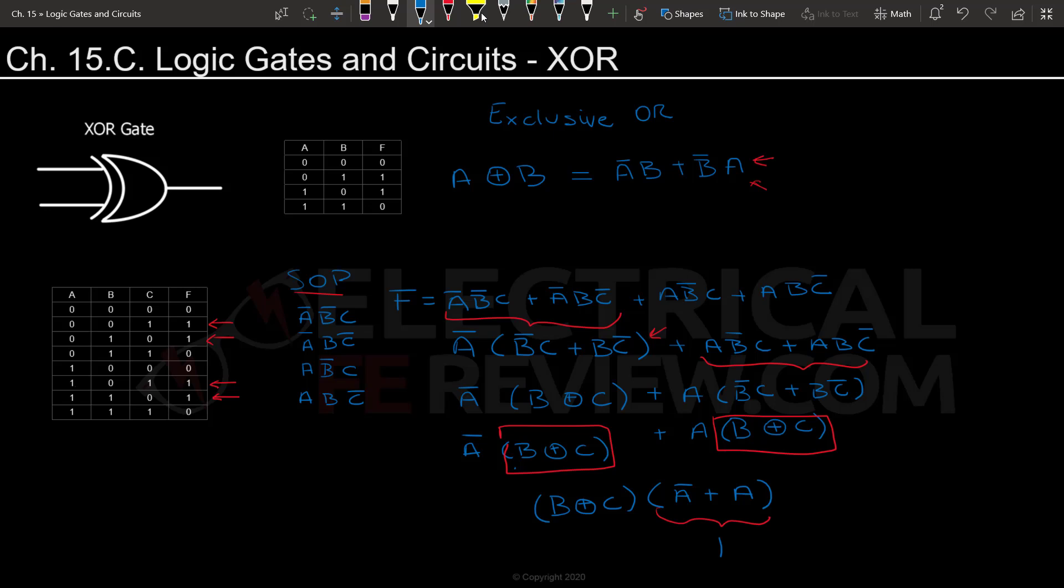That means that since there are only two options, you're going to end up having a one there. And OR with a one is always going to be one. So in this case, our function simplifies to simply B XOR C.